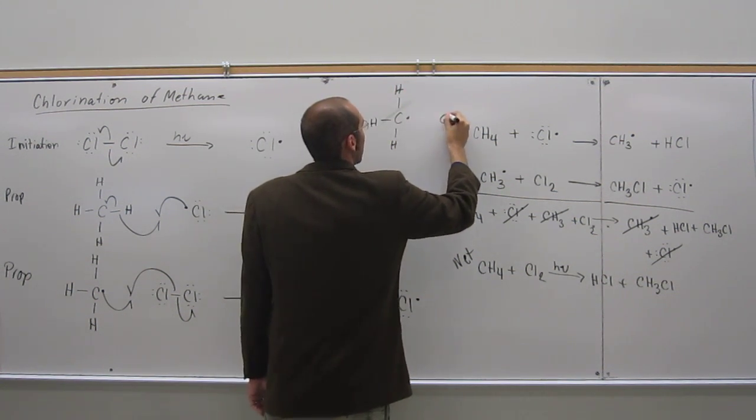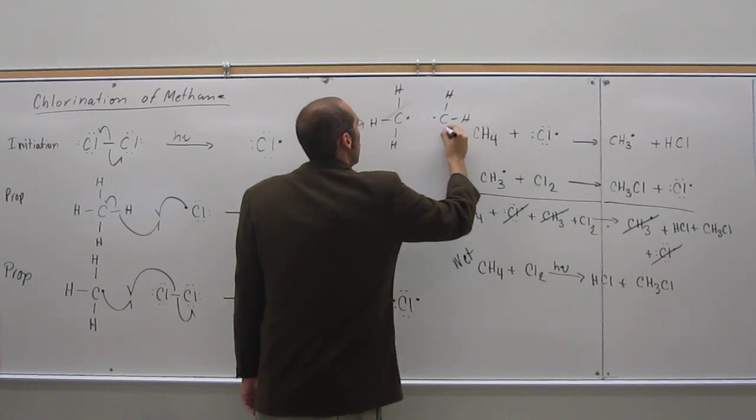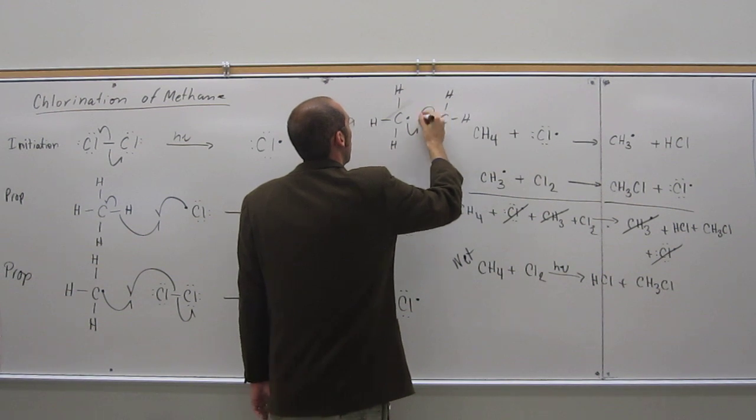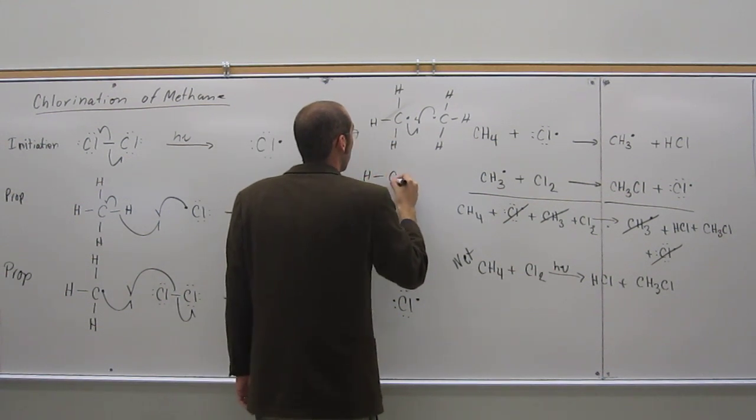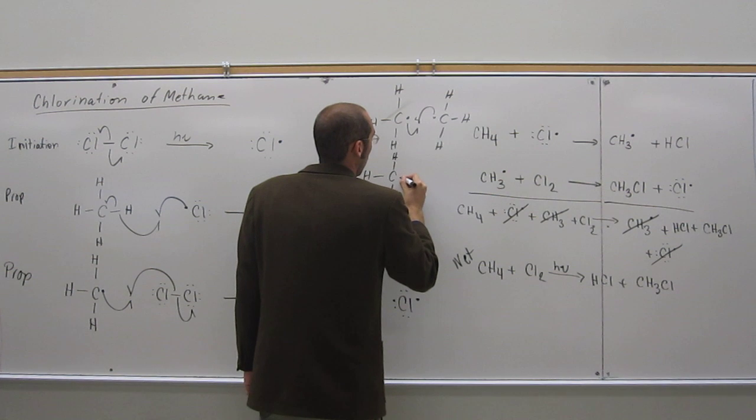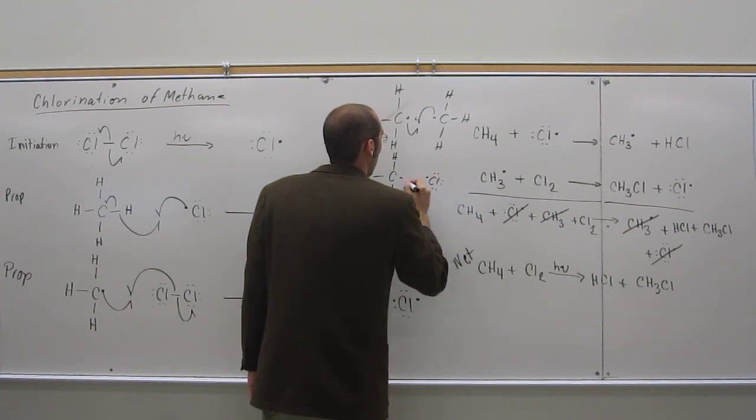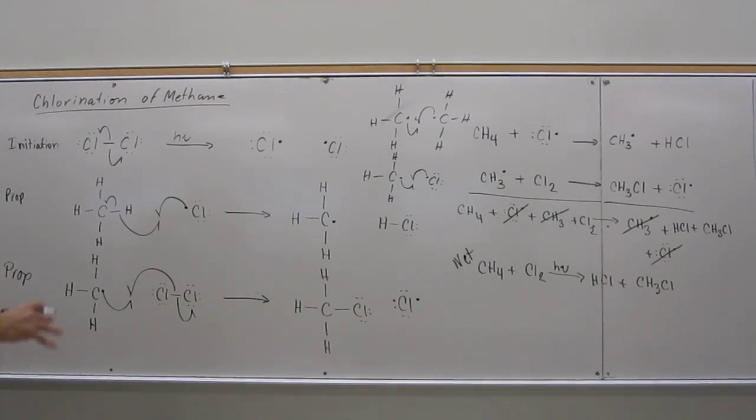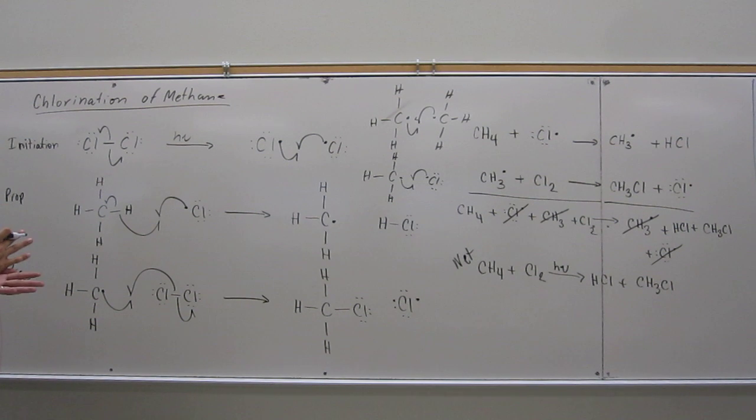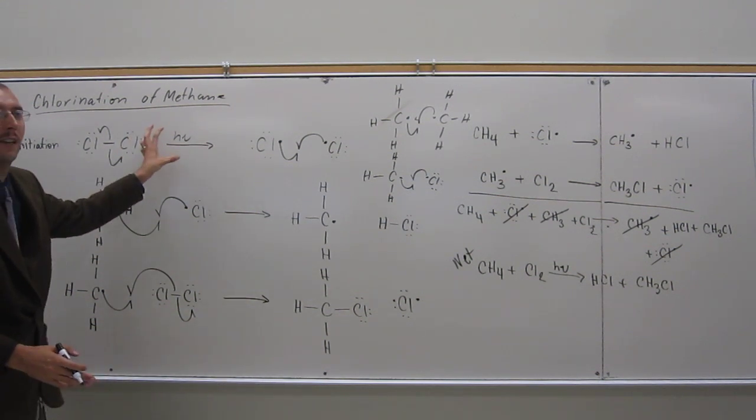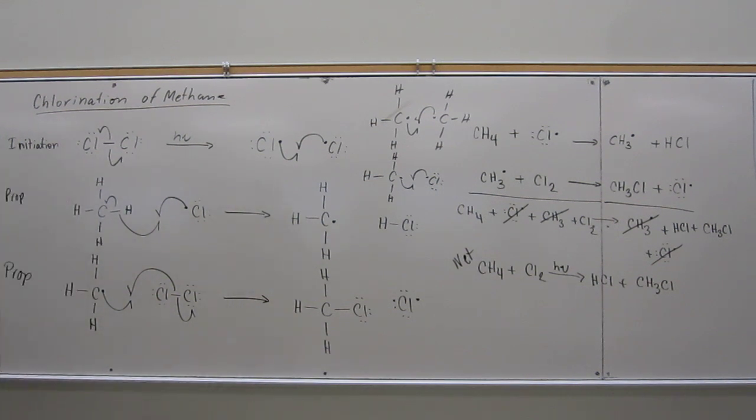You could have, like Dave was saying, this methyl radical with the chlorine radical like that. So those are termination steps there. Or you could have the two chlorines, like that. And so those are all termination steps. Once that happens, it stops the chain reaction. But, of course, you're shining light on the thing. So, you know, it's going to keep going until all your chlorine is, or all your stuff is chlorinated. Are there any more questions on this?